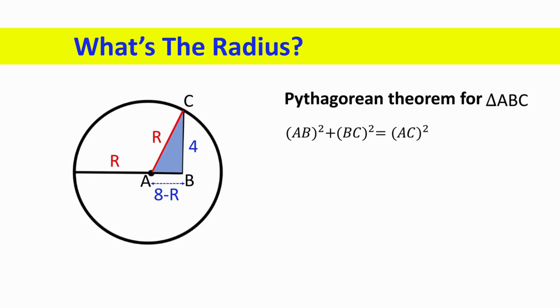If we substitute 8 minus R and R in this equation, we get this. And by expanding the first term at left, we can see that we have R squared at left and R squared at right. We can cancel out these two terms. And after simplifying the equation, we get 16R equals 80.